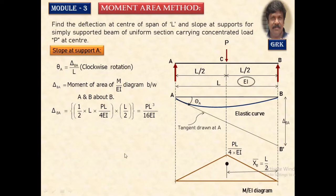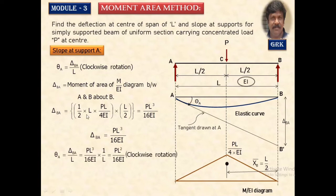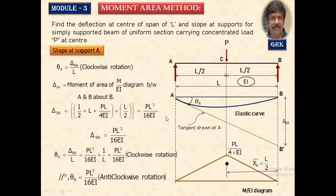Delta_BA equals (1/2) × L × (PL/4EI) × (L/2), which when divided by L gives slope at A equal to PL²/(16EI) in the clockwise direction at support A. Similarly, slope at B equals PL²/(16EI) in the anticlockwise direction.